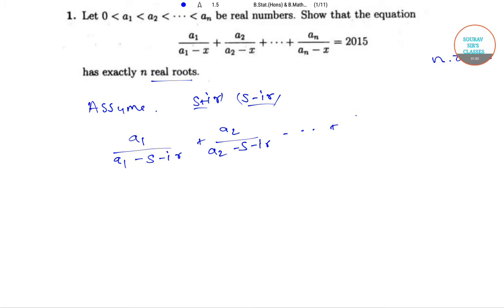Similarly, by substituting x as s minus ir we will have a1 divided by a1 minus s plus ir plus a2 divided by a2 minus s plus ir and so on till an divided by an minus s plus ir. This is also equals to 2015.